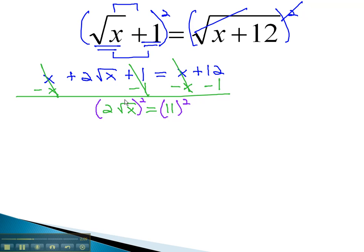As we do, we must square both parts. 2 squared is 4, and when we square the square root, we're just left with the x. Equals, squaring the other side, 11 squared is 121. Finally, we can isolate the x by dividing by 4, and we find x is equal to the fraction 121 over 4.